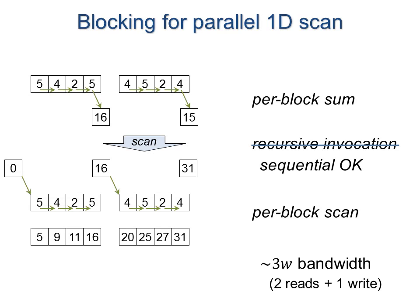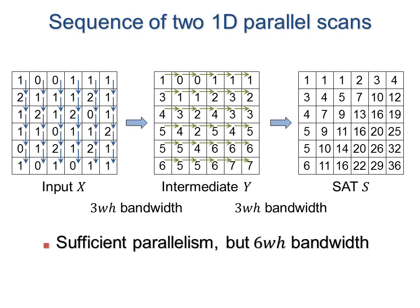Thus, memory bandwidth is 3 accesses per element. While there is now sufficient parallelism, the two successive scans must both read and write memory, leading to high bandwidth.